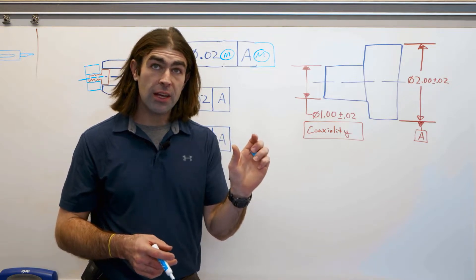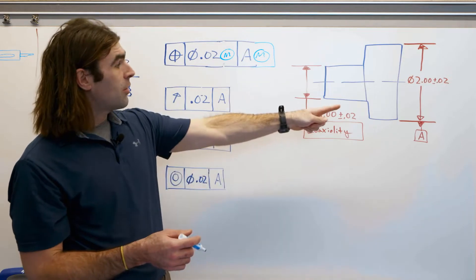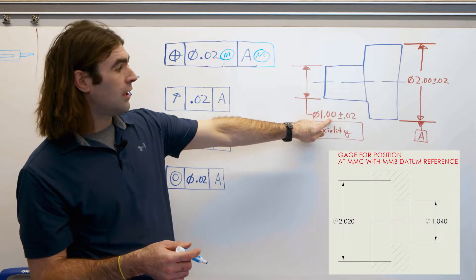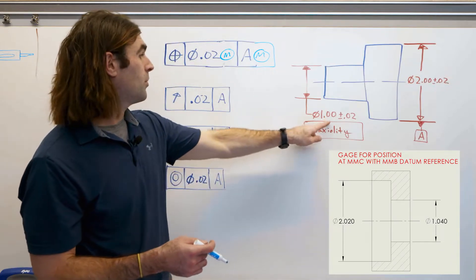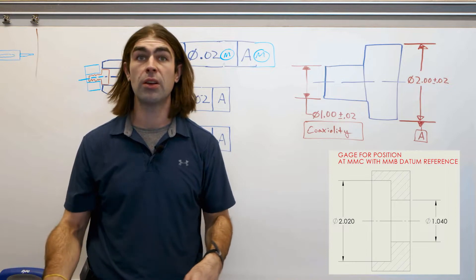And you fit the datum through there. As long as the datum fits and this fits through its virtual condition, which is 1.06, so the MMC plus the geometric tolerance, the part would be good.